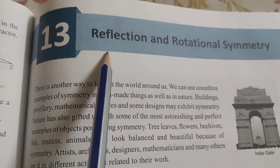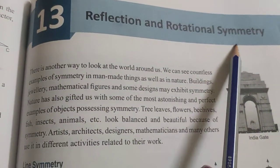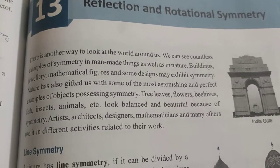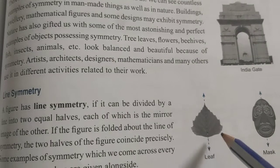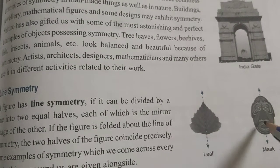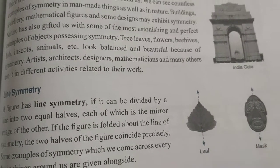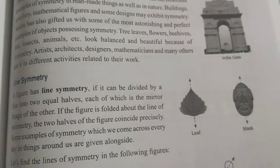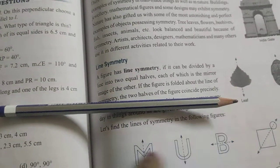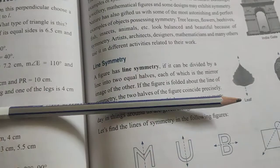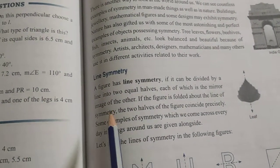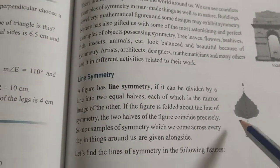Today we'll be starting a new chapter on reflection and rotational symmetry. What is symmetry in everyday life? You see many things such as a leaf, a mask, or a pencil. When you buy a pencil from the shop, both ends are circular. These all have a line of symmetry.